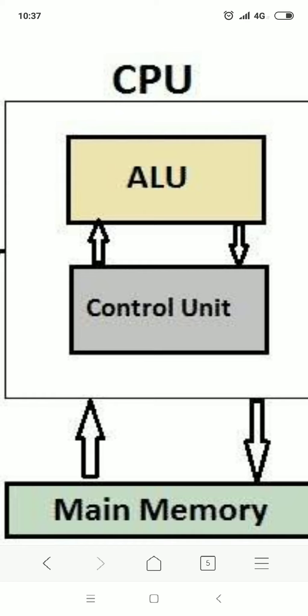CPU के तीन main parts में से दो parts हैं जो processing को perform करते हैं — that is ALU and CU. ALU का full form है Arithmetic Logic Unit और CU का full form है Control Unit. ये दोनों main parts हैं, और जो CPU का third part है वो है Memory and Storage.